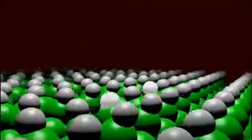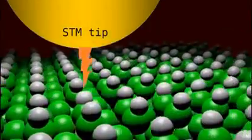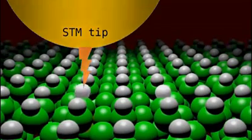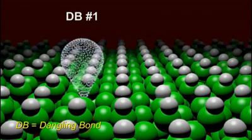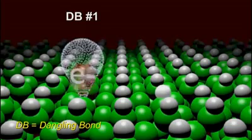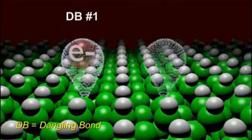STM also has the capability of positioning the tip right above one of the hydrogen atoms and, by applying an electric field, cause a chemical bond failure that releases the hydrogen into the vacuum. What remains there is a dangling bond capable of holding a localized electron.